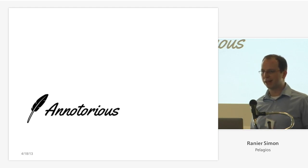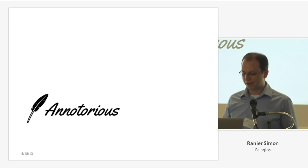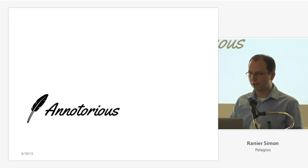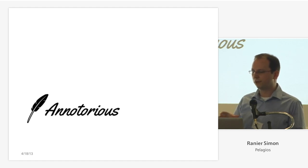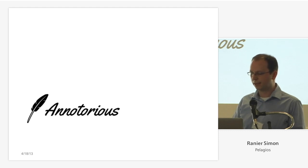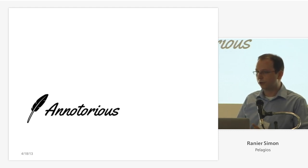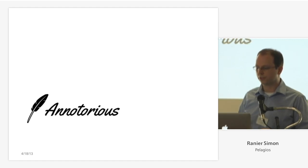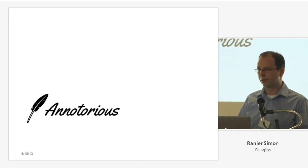This is basically what we salvaged from the prototype that we built then. Ennotorious is a library, so it's not an annotation system, but it's a library which allows you to build your own annotation mashups, and you can embed similar annotation functionality into your own website. That was the idea behind Ennotorious as a second spin-off of this original open source tool that we built as part of the Europeana Connect project.